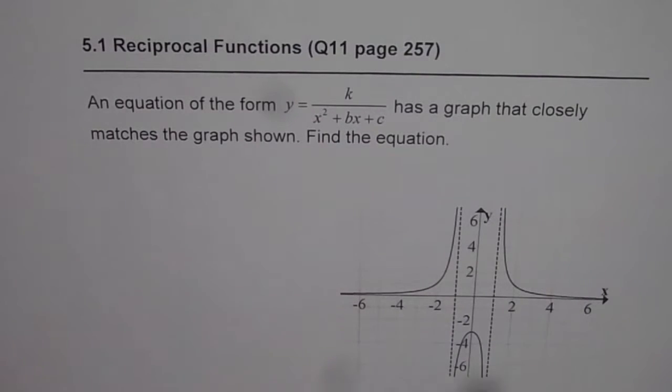So here we have the reciprocal of a quadratic function. It is in three pieces, that means we have two vertical asymptotes given here. So the quadratic function should have two real roots. What we should do is find the equation of the quadratic function.